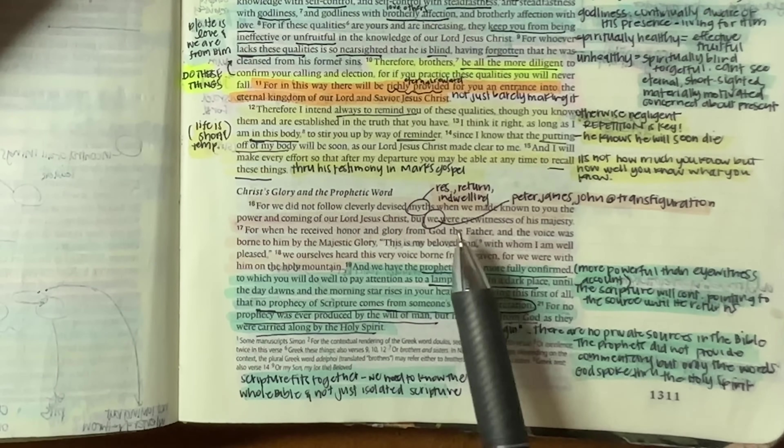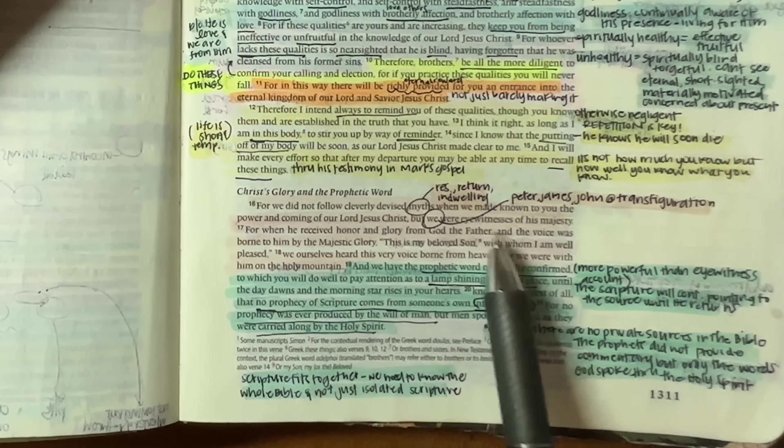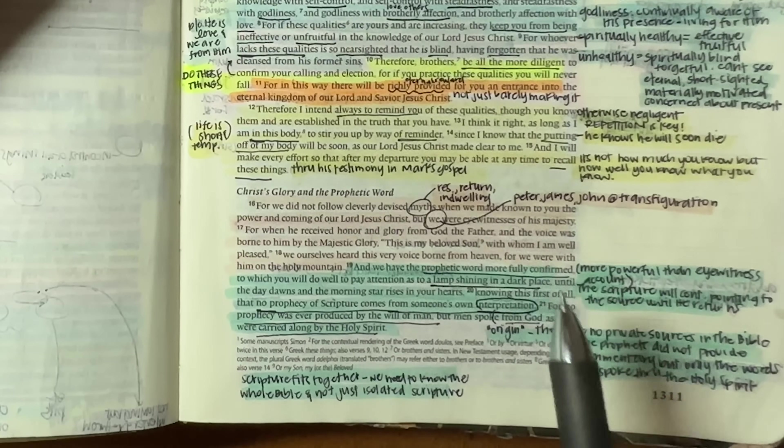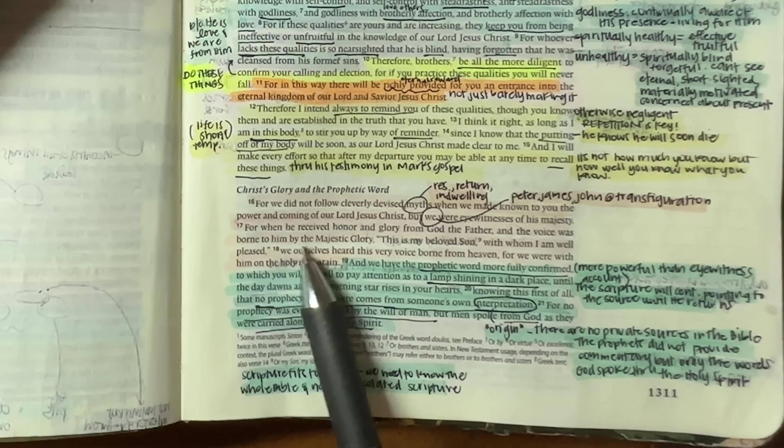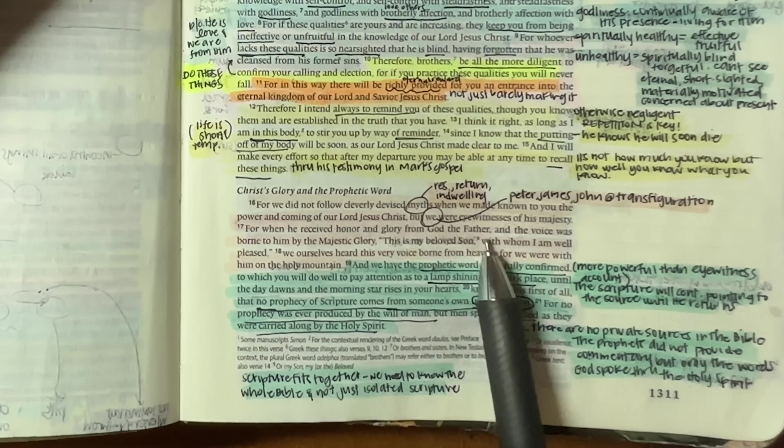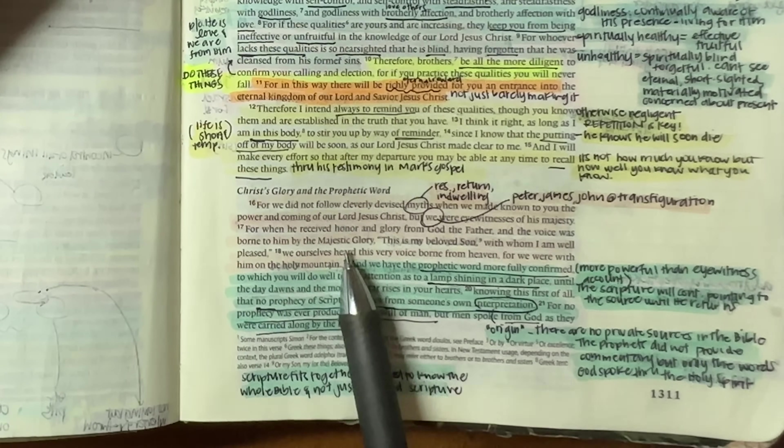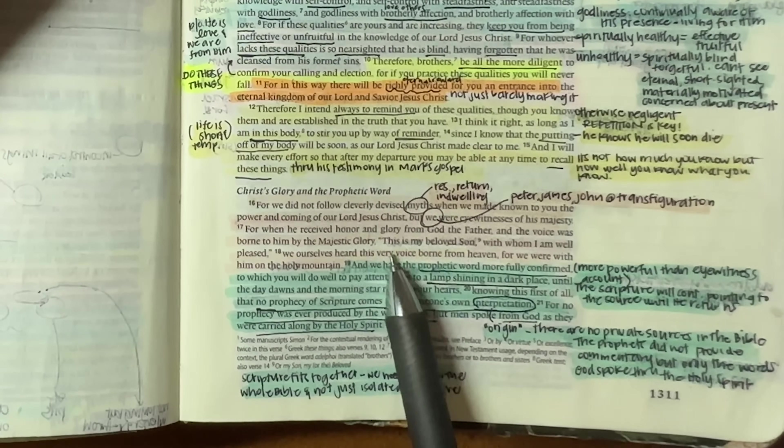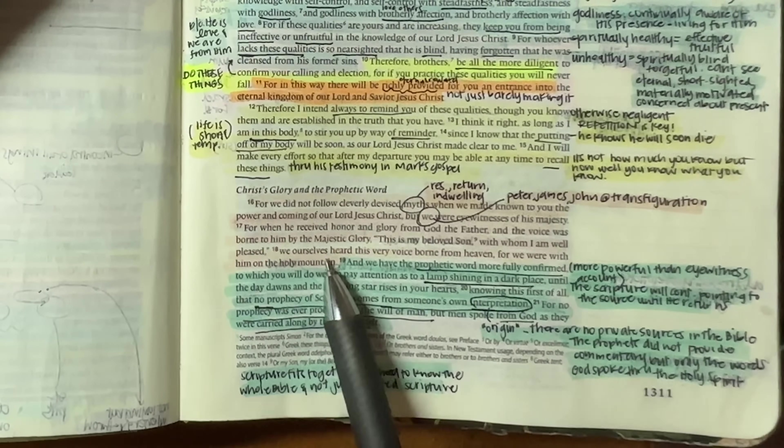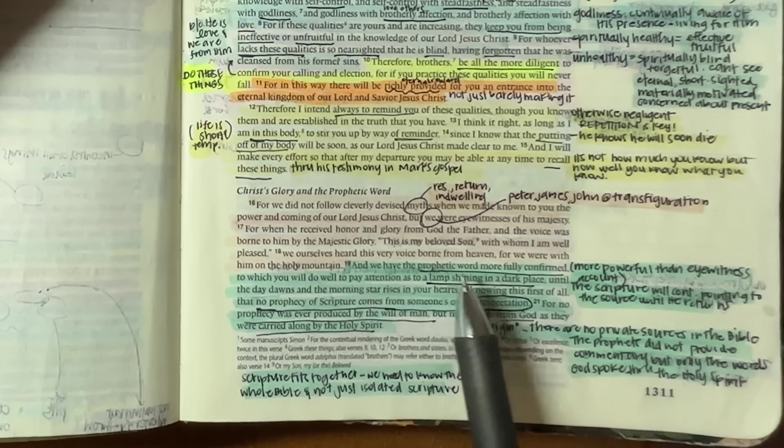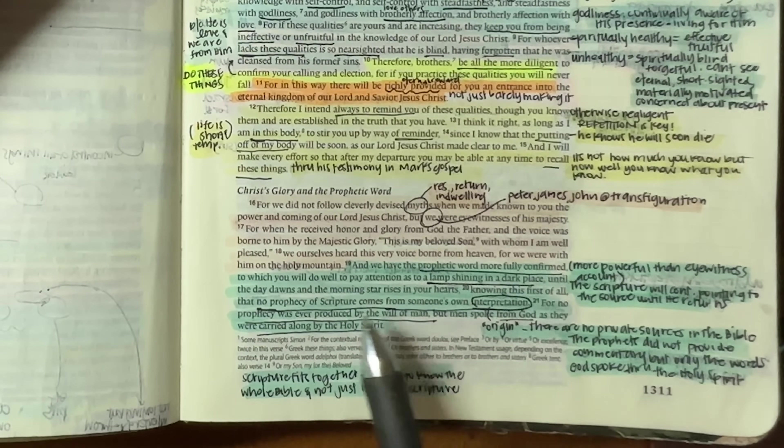But instead, he's saying, hello, we saw, me, James, John, we're at the transfiguration. We saw his glory. For when we received honor and glory from God, the Father and the voice was born to him by the majestic glory at the transfiguration. This is my beloved son with whom I am well pleased, he said. We ourselves heard this very voice born from heaven, for we were with him on the holy mountain.